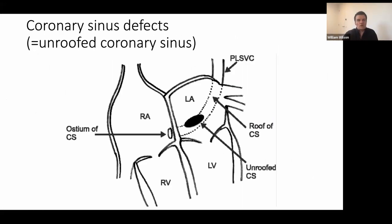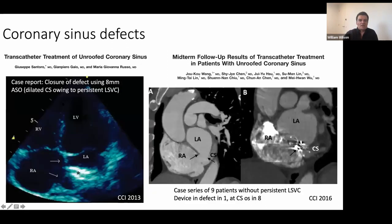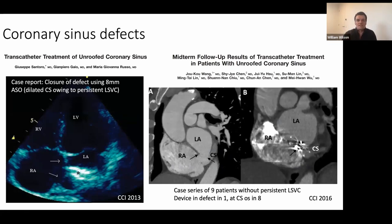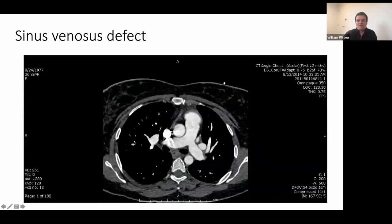Coronary sinus defects cause a left-to-right shunt from the LA into the coronary sinus and out to the RA. An unroofed coronary sinus is what this looks like. Most of the time these go for surgery. There are case reports of closing the defect with a small plug, but most reports involve blocking off the coronary sinus at its origin — leaving a small obligate right-to-left shunt of deoxygenated blood from the coronary sinus into the left atrium, so saturations run around 94-95%. That would be for patients not suitable for surgery.